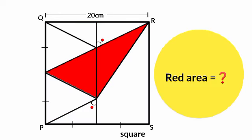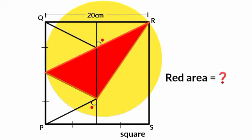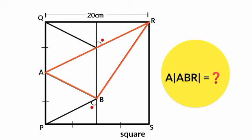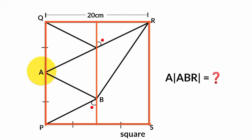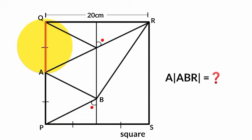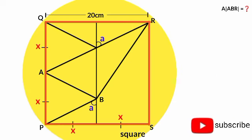We are to calculate the area shown in red — that is, the area of triangle ABR, where we label the relevant points A and B. The quadrilateral PQRS is a square with side length 20 centimeters. We can see that one line is parallel to sides PQ and RS. The parallel segments are congruent; let's assume their length is X each, and the angles they make are each assumed to be angle A.